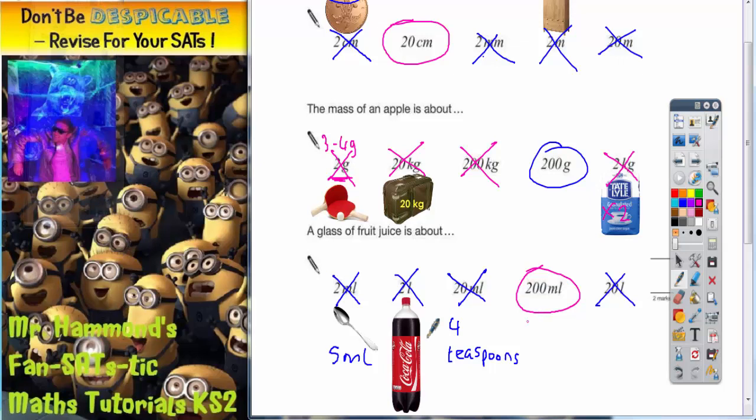Just think about a can of Coke as well. Obviously, we've got a two-liter bottle of Coke, but a can of Coke, and most cans that you buy from can machines or from the supermarket, normally come in at about 330 milliliters. So a glass of fruit juice is over half of a can is probably what you'd have. So that's the most sensible measurement to go with.